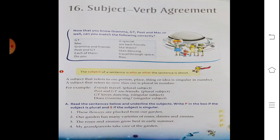Our garden has many varieties of daisies, roses and zinnias - plural subject, so write that in the box. The roses and zinnias grow best in early summer - this is also plural subject. Number four: My grandma takes care of garden - this is also plural subject.